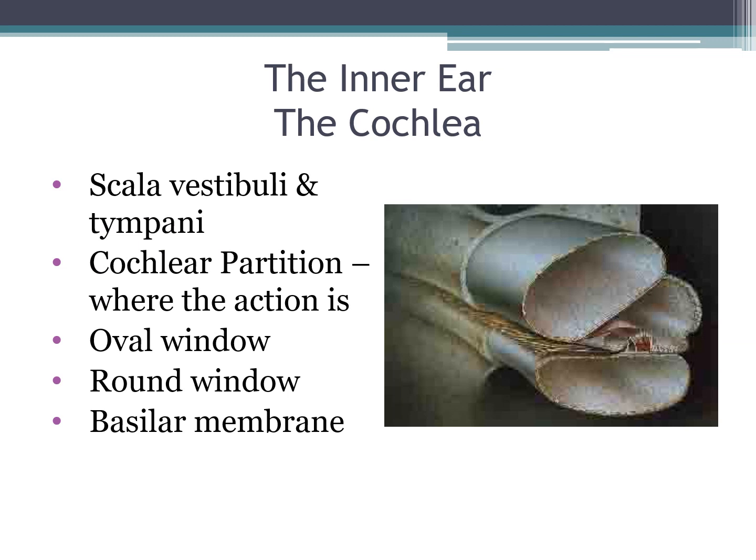Starting back at this picture: the stirrup — the stapes — is pushing and pulling on the oval window, which is a membrane. That push-pull is affecting the inner ear. This is like a shell going up from the base into what's called the apex, and it has two pieces: the scala vestibuli and the scala tympani. The oval window is pushing and pulling on the liquid up in the scala vestibuli.